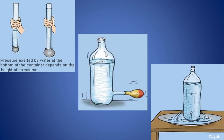Yeh do column hum ne liya aur neeche se rubber ya balloon ko baandh diya. Ab dekhte hain — hum jitna paani bharenge, utna woh phulta jaega. Iska matlab kya hai? Jitna zyada water hoga, utna pressure zyada hoga, aur utna woh phulta jaata hai. Iska matlab hai water exerts pressure on the wall of the container in which it is present. Column kyun swell nahin ho raha? Kyunki woh bahut hard hai, lekin pressure zyada kahan act karega — jahan par thin, weak portion hai. Woh rubber ka thin sheet bana hua hai, woh weak hai, isliye usko phula deta hai.